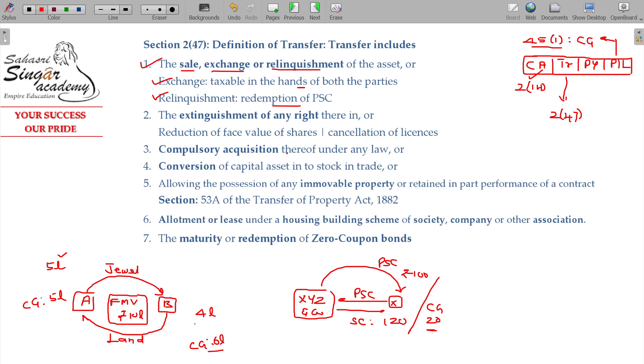Similarly, extinguishment of any rights - that is also coming under transfer. Probably right to control management also comes under property. When you relinquish that, it is also coming under transfer.